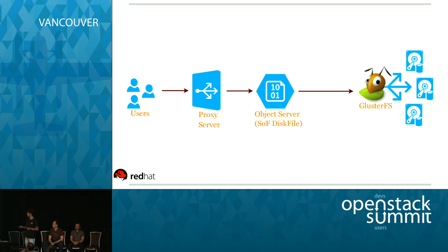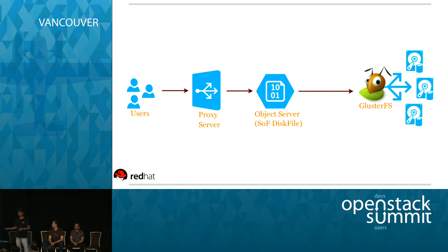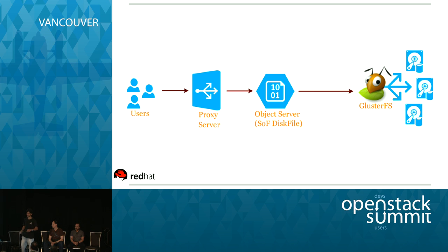Here's an example. As of today, when users send a GET or PUT request to the proxy server, the proxy refers to the storage policy and routes the request to the right object server. Once the request comes to the object server, it uses the disk file API — and Swift on File is a disk file API implementation that can talk to any POSIX-based clustered file system. In this example, Swift on File talks to the disk through GlusterFS. GlusterFS handles distribution and replication among cluster nodes. The hop between proxy and object server is therefore not relevant or useful.